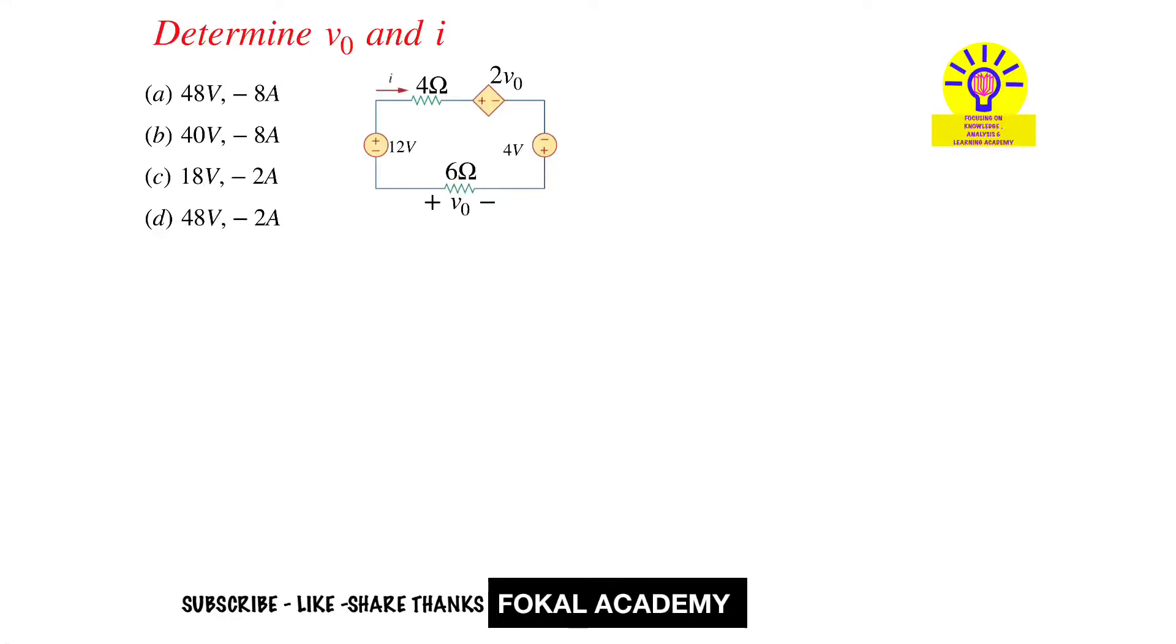Hi dear ones, in this problem here one circuit is given. In this circuit two voltage sources are there, one dependent source is there, and two resistors are there. So then how can you find the voltage v0 and i in this circuit? This is the problem. First of all observe here, the current was given in this direction.